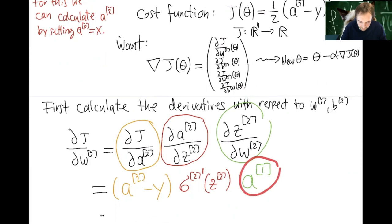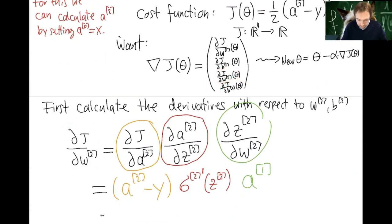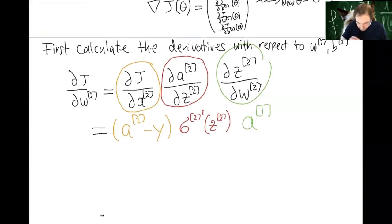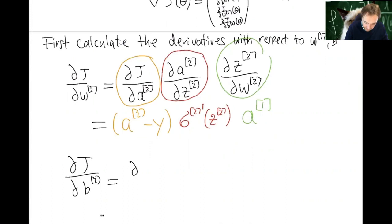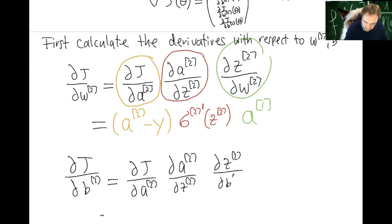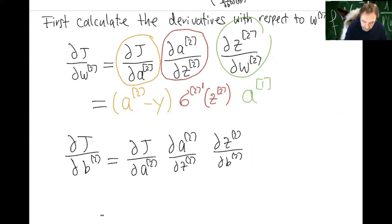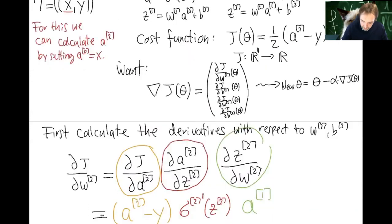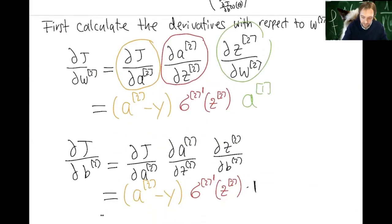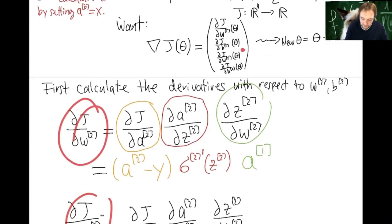All these numbers can be calculated, and therefore we can compute ∂J/∂w2. Similarly, for ∂J/∂b2 the chain is the same except that ∂Z2/∂b2 = 1, so we just get (A2 − y) · σ2'(Z2). These give us the two derivatives corresponding to the last layer.